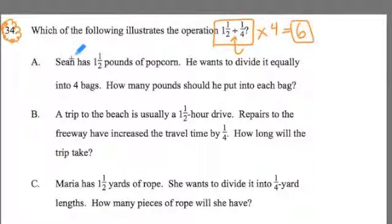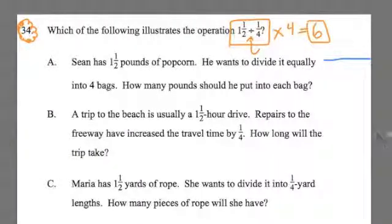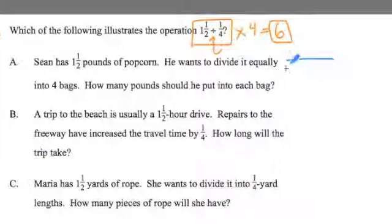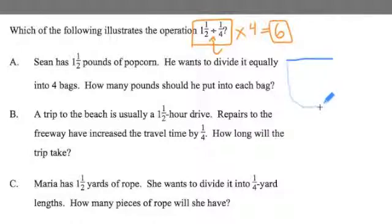It says here, A, Sean has a pound and a half of popcorn. He wants to divide it equally into four bags. How many pounds should he put in each bag? All right, so let's imagine here a big cup of popcorn for Sean. I do the model drawing and what do I say about this? Well, this is equal to 1.5 pounds of delicious popcorn.